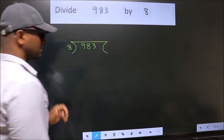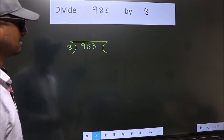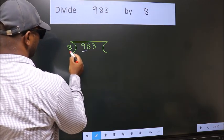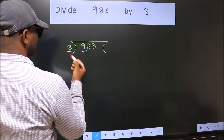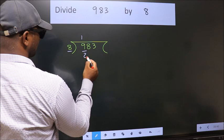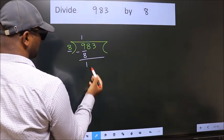This is your step 1. Next, here we have 9, here 8. A number close to 9 in the 8 table is 8 once, 8. Now we should subtract. We get 1.